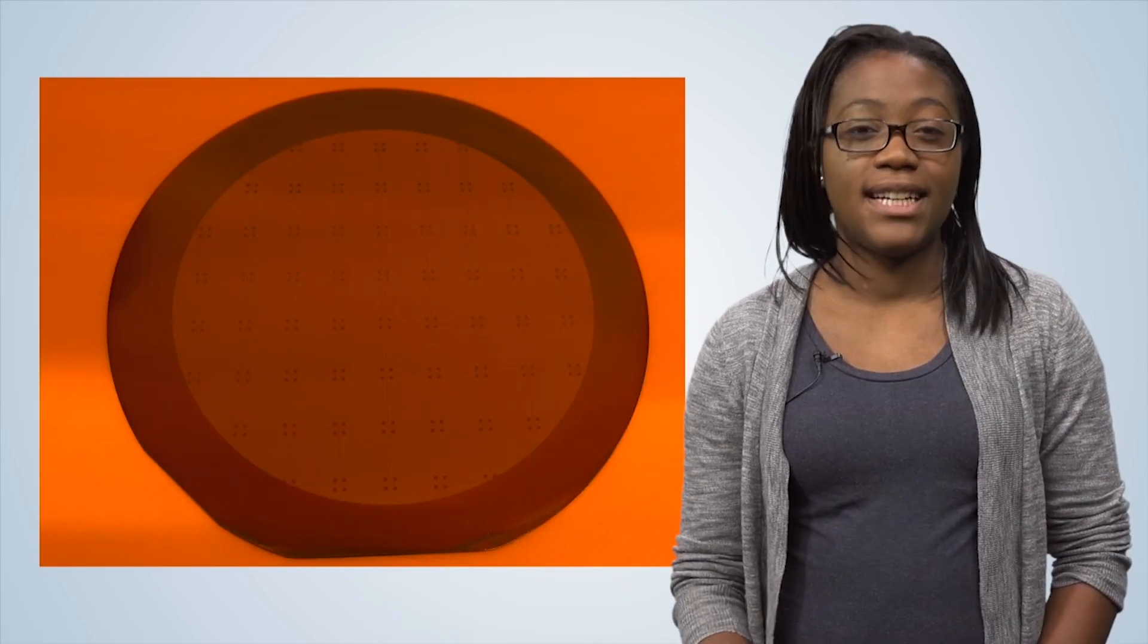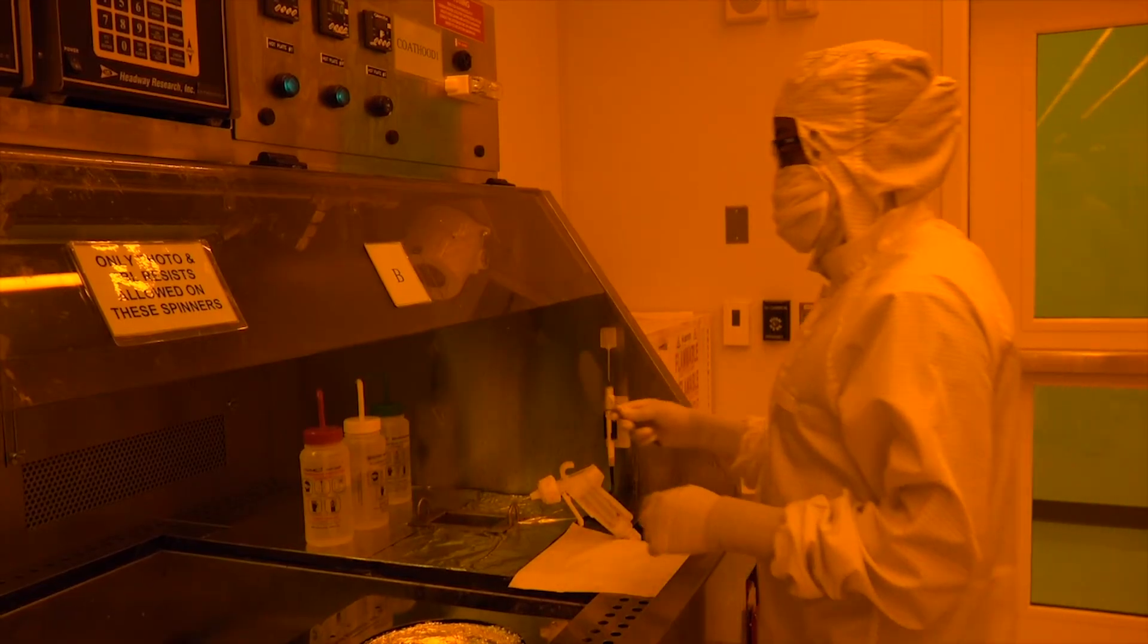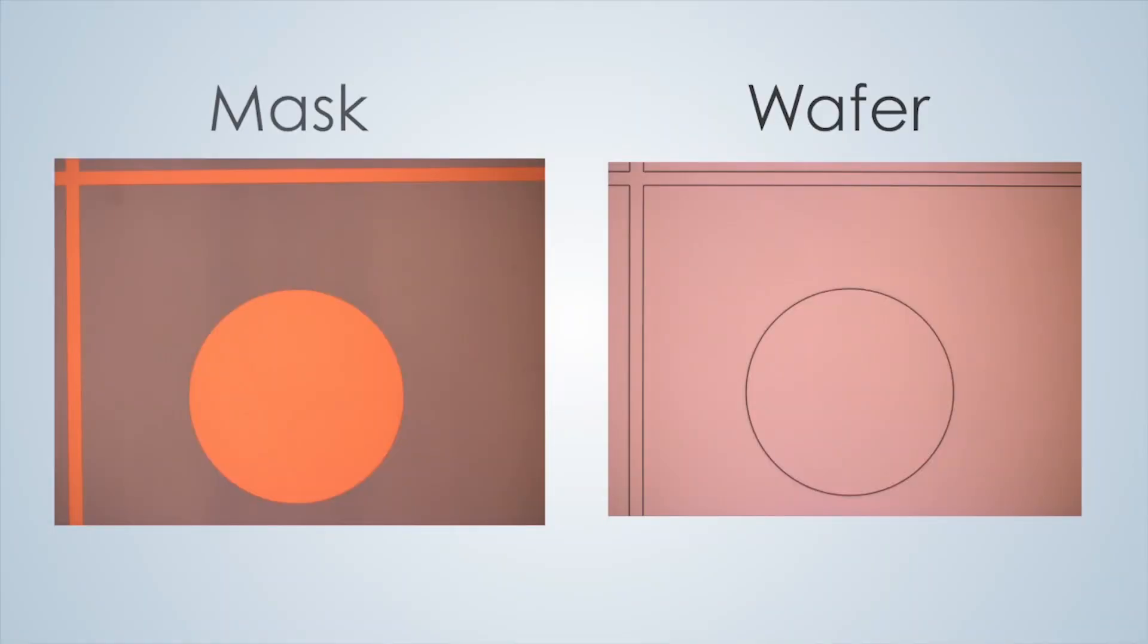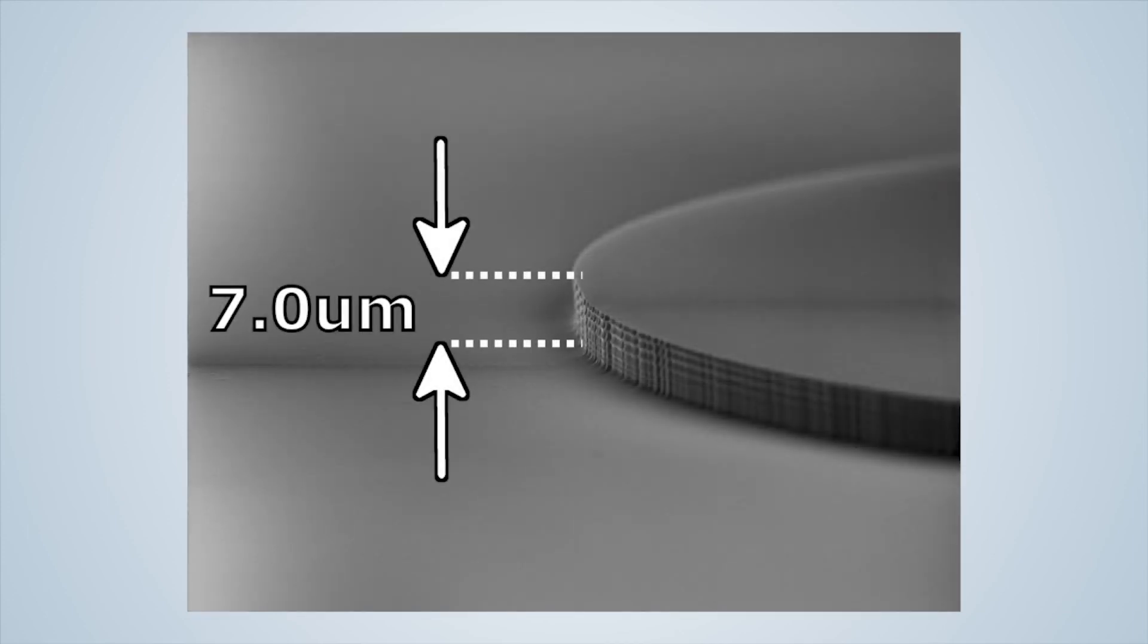The etching process is performed using a separate dedicated instrument called a reactive ion etcher. The entire process takes about 30 minutes and won't be shown in this video. Here is the etched sample. The silicon has been etched in the areas that were not protected by the photoresist. Let's remove the photoresist using an acetone solvent. Now, we can see that we have a copy of our photomask on the silicon wafer. Several microns of silicon have been etched away. We cannot see the depth of the etch clearly using an optical microscope, so we can use a scanning electron microscope to get a better look. Here, we can see the mass pattern has been transferred to the wafer, and we can measure how deep the pattern was etched into the silicon. Thanks for joining me today to learn about photolithography.